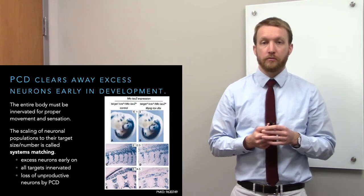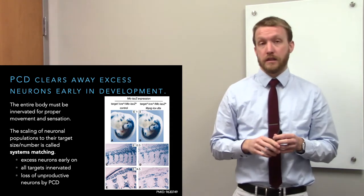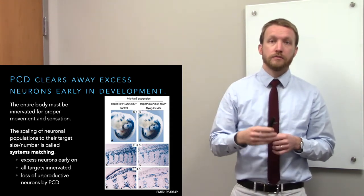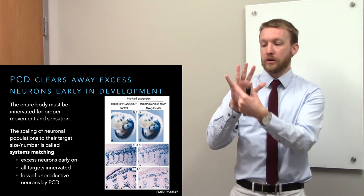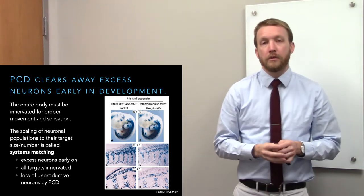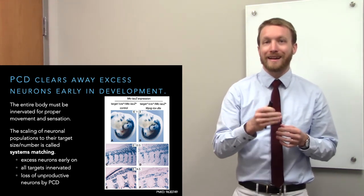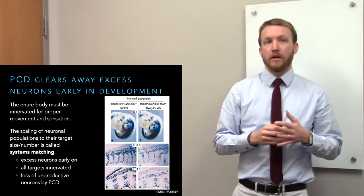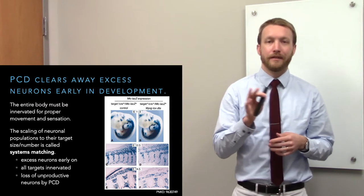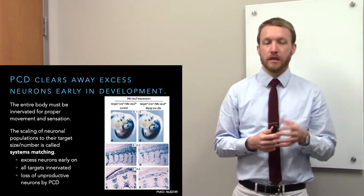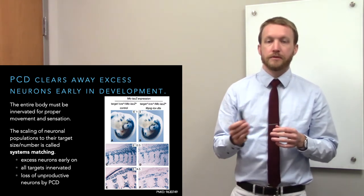Apoptosis is the most common form of programmed cell death, and programmed cell death is used to clear away excess. We do this in the nervous system and outside it — you've probably seen the fin being cleared away to form a hand. That's how we carve out the fingers. We do the same thing with the nervous system. When the nervous system is first made there's an excess of neurons to ensure we can innervate the entire body — muscles and skin — so we have proper motor and sensory function.